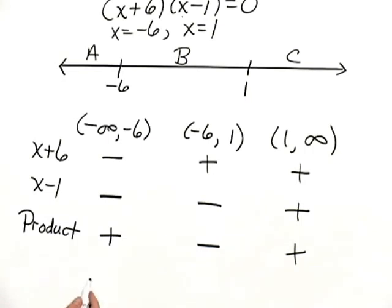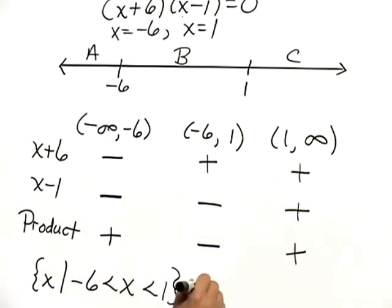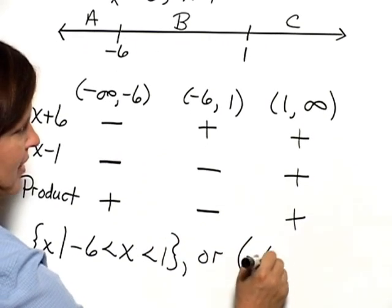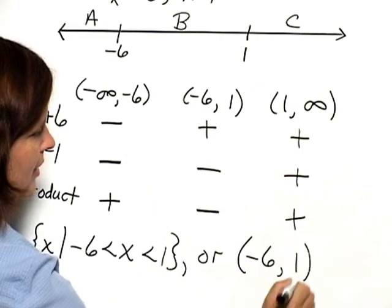We don't include the endpoints because the symbol is strictly a less than. So our answer would be the set of all x such that negative 6 is less than x and x is less than 1. Or in interval notation, we can write the interval from negative 6 to 1.